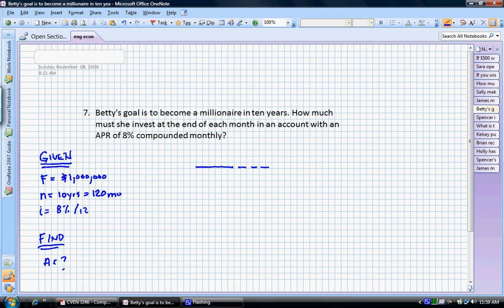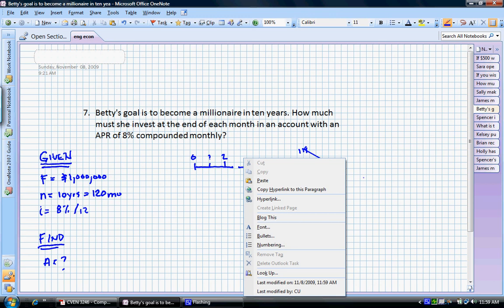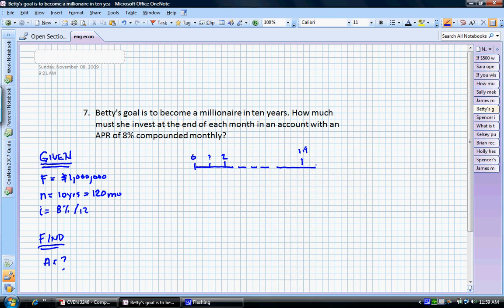Remember, we have a long series, so we're going to have that continuous break there. So 0, this is time 1, time 2, remember, 119 months. And then finally, at 120 months, she wants to have some future value of $1 million.